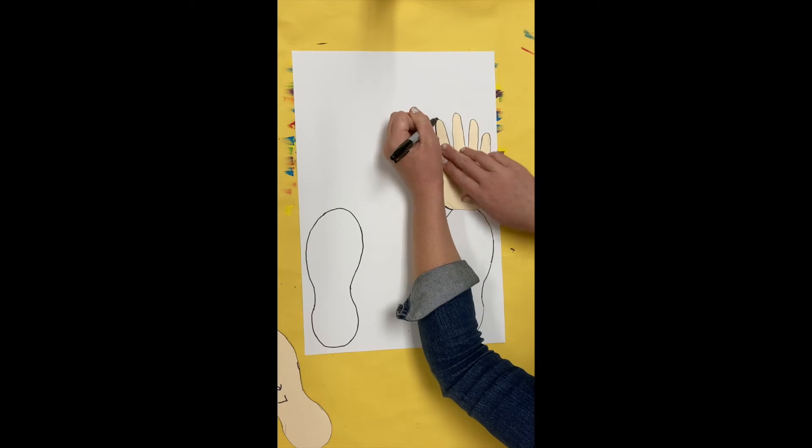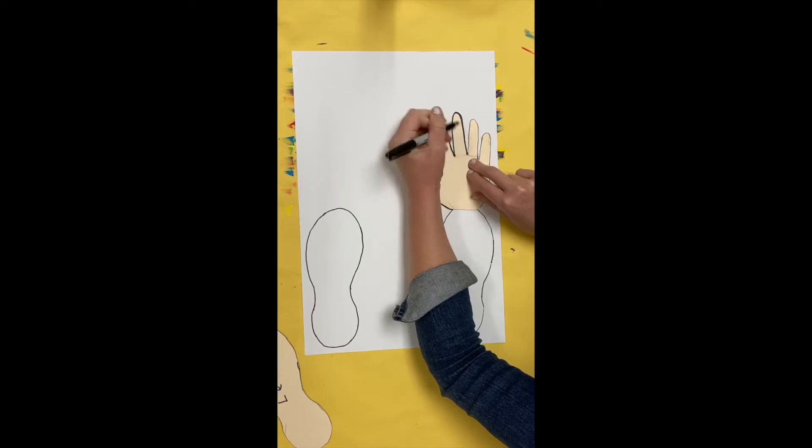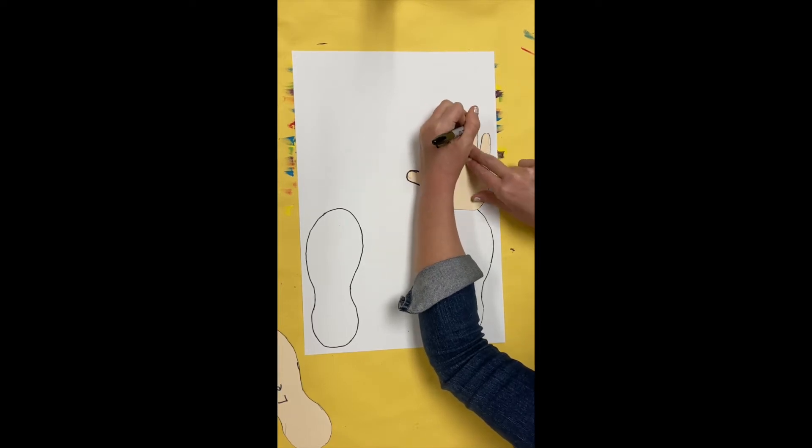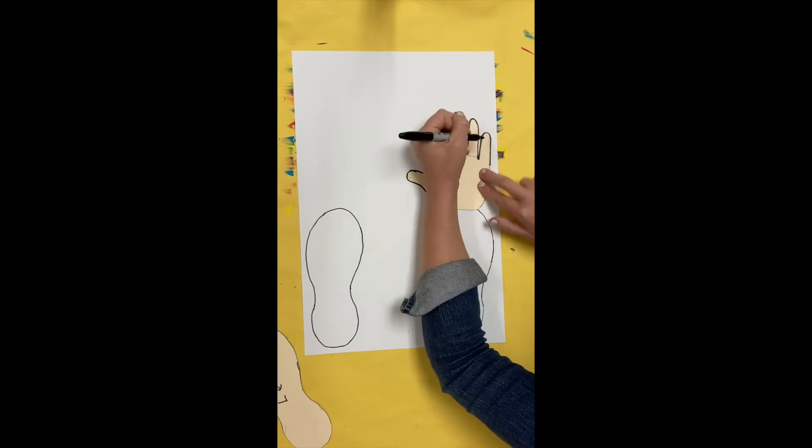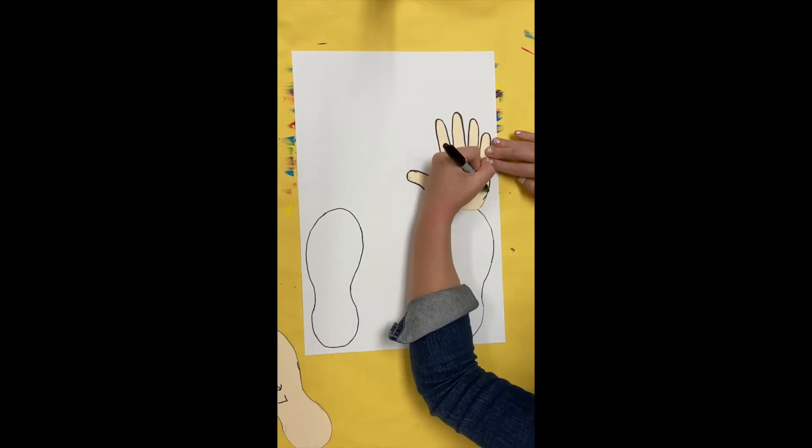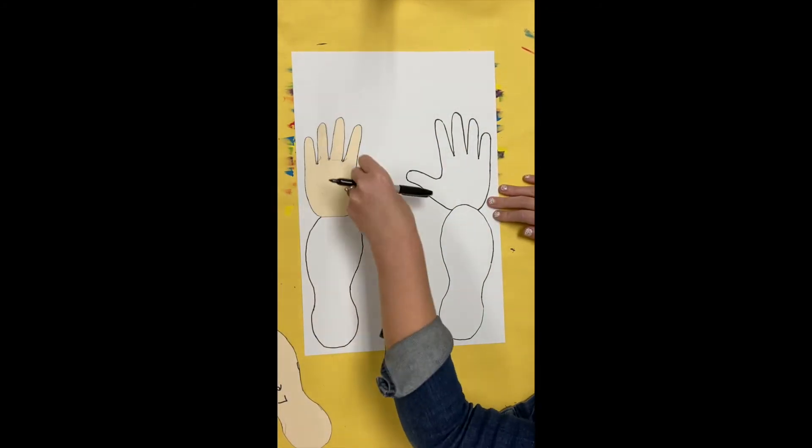Hold those fingers still as you are tracing around them so they do not move. Use your helper hand so it turns out the best it can. Take your time and work carefully, slowly, and neatly. Stop when you get to the shoe. Do not trace the line that goes across the shoe.